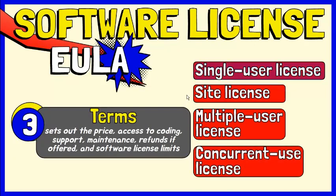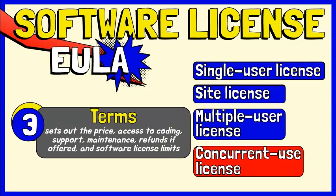A single-user license limits the use of the software to one person at a time. A site license is generally priced at a flat rate and allows the software to be used on all computers at a specific location. A multiple-use license is priced per user and allows the allocated number of people to use the software at any time. A concurrent-use license is priced per copy and allows a specific number of copies to be used at the same time.